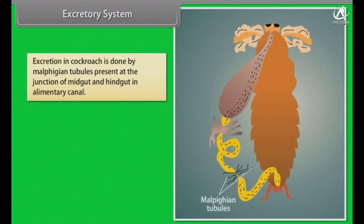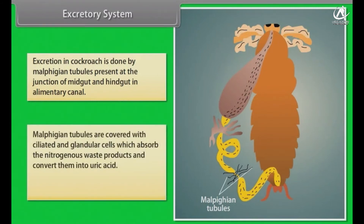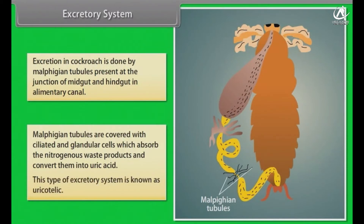Excretory system. Excretion in cockroach is done by Malpighian tubules present at the junction of midgut and hindgut in the alimentary canal. Malpighian tubules are covered with ciliated and glandular cells, which absorb the nitrogenous waste products and convert them into uric acid. This type of excretory system is known as uricotelic.